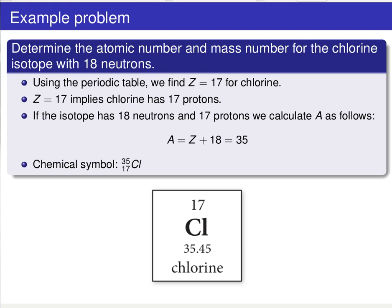So let's take a look at an example problem here. So I want you to determine the atomic number and mass number for the chlorine isotope with 18 neutrons. So if we go to the periodic table, we see that the atomic number for chlorine is 17. So the atomic number being 17, and the fact that we have 18 neutrons allows us to calculate A, the mass number. We plug in that value of 17 for Z, add 18, and we will end up with a mass number of 35.